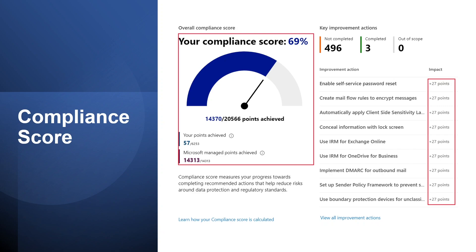The main difference between Compliance Manager and the Compliance Score: Compliance Manager is an end-to-end solution in the Microsoft 365 Compliance Center that enables admins to manage and track compliance activities. The Compliance Score is a calculation of the overall compliance posture across the organization, and it is available through Compliance Manager.